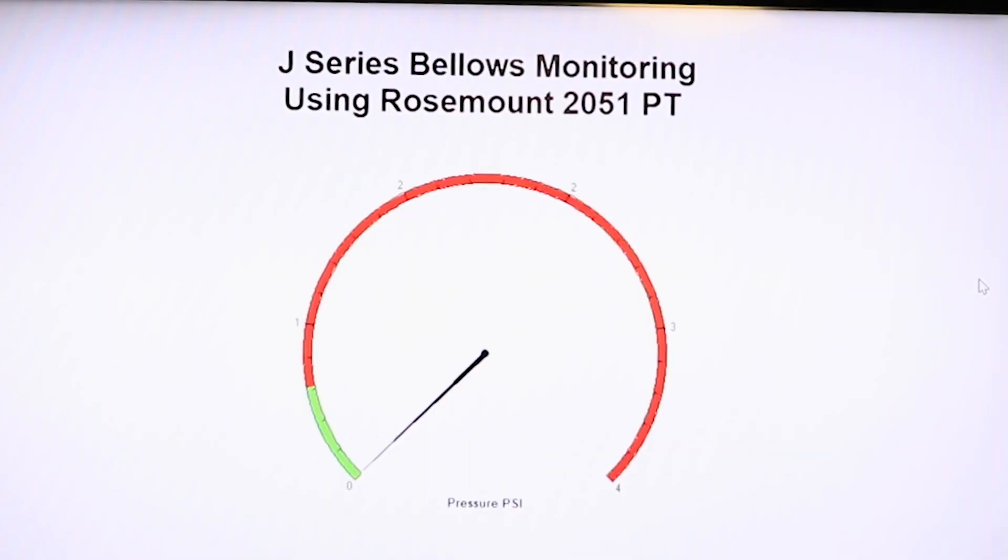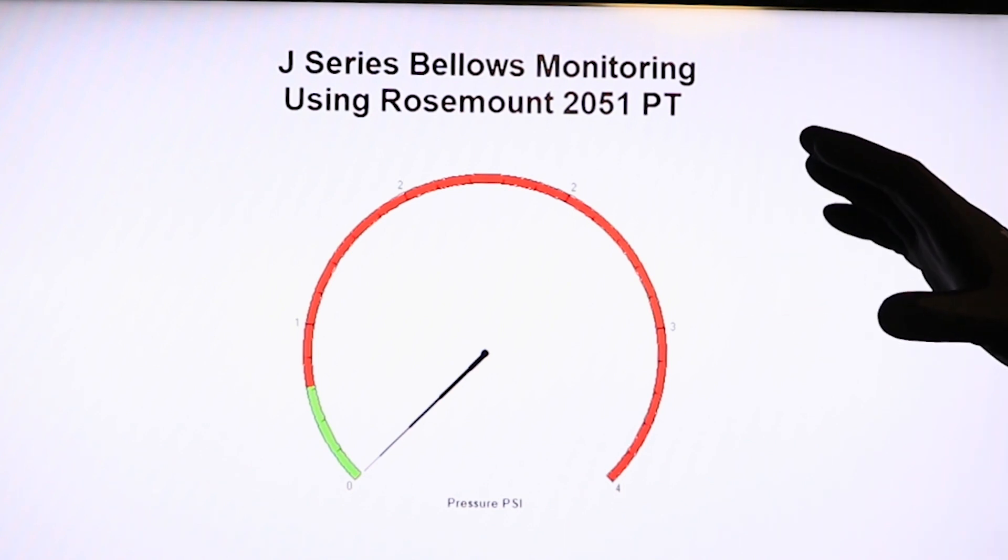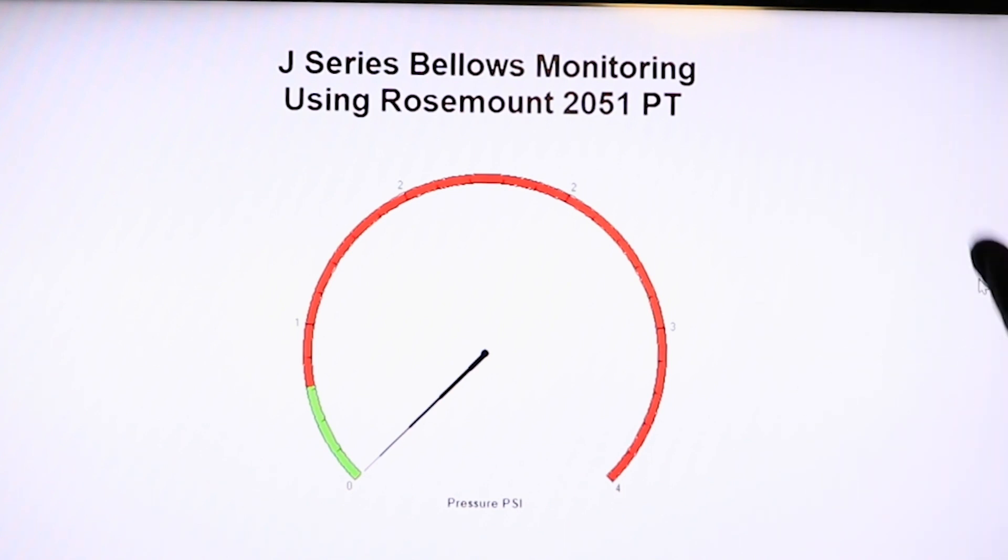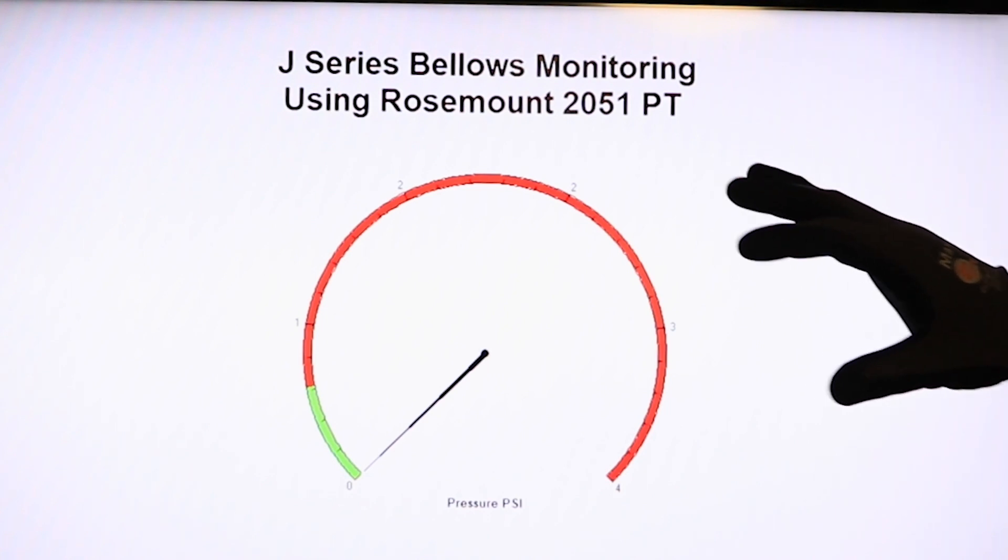A customer can interpret this logic and provide instant notification of a bellows failure to their operators. Also, they can use the information from this graph as well as the clearances from the piston that we provide to convert this pressure into a flow.